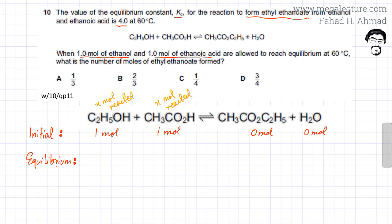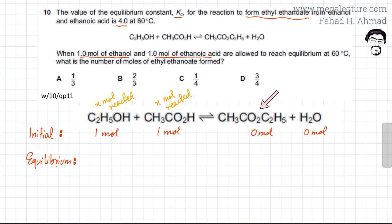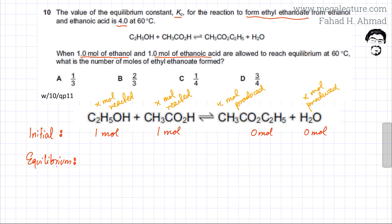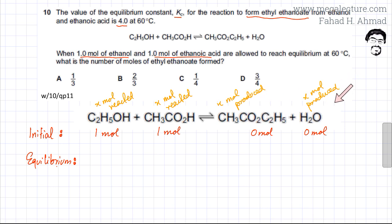Similarly, the equation ratio for products shows that one ester and one water molecule are produced for every one ethanol and one ethanoic acid that react. So if x moles of ethanol reacted with x moles of ethanoic acid, then x moles of ethyl ethanoate would be produced and x moles of water would also be produced. All coefficients are x because all stoichiometric ratios are 1:1.